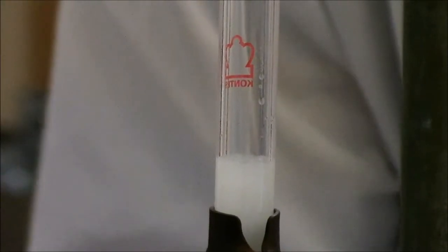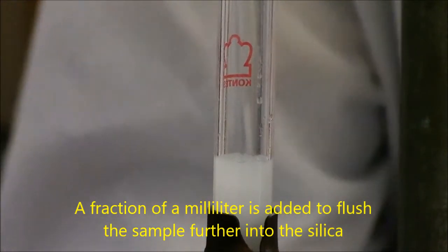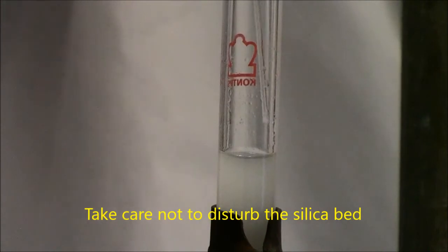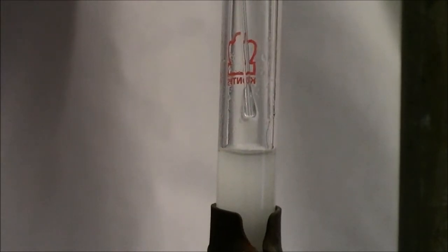Gently add solvent on top. Spray it kind of slowly around the edges. Just a few drops is all we need. Get the tip of the pipette down low. Add a few more drops there. Let's drain that into the silica now. That looks great.